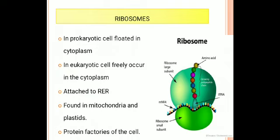The next one is the ribosomes. There are two types of ribosomes: one is the 70S ribosome and another one is the 80S ribosome. These ribosomes are found in all organisms, and they vary from one organism to another.